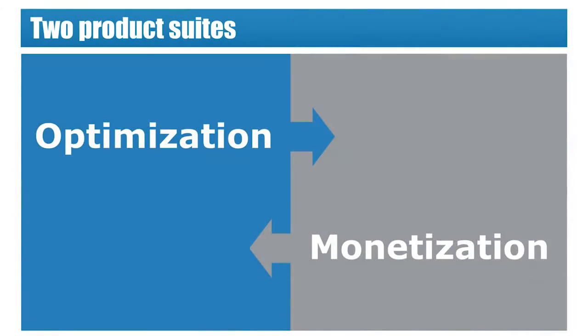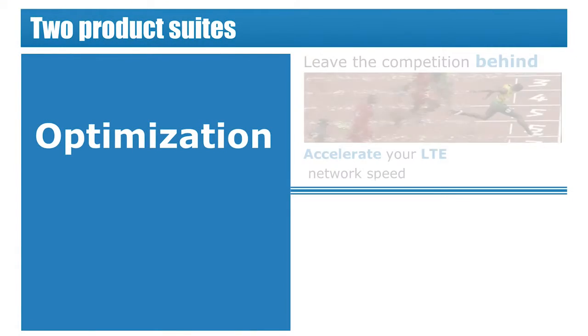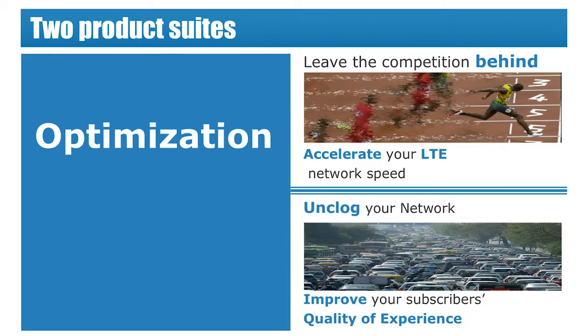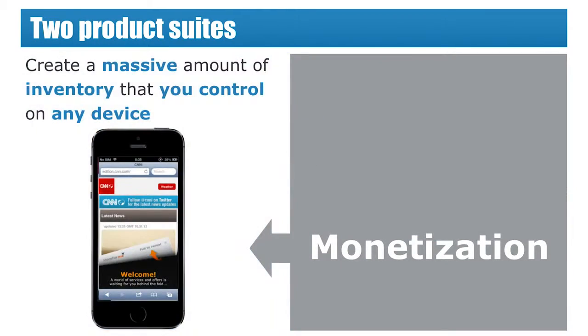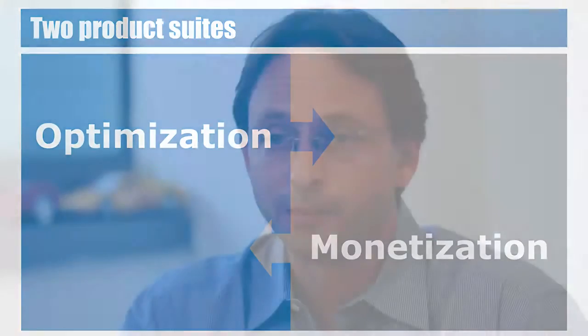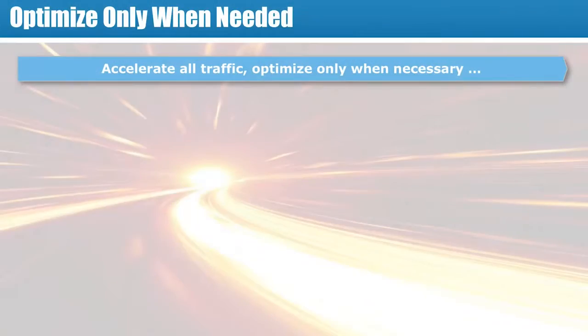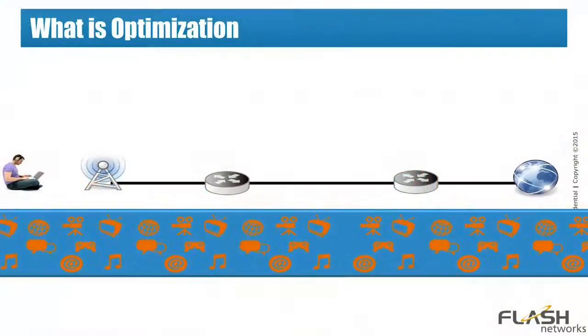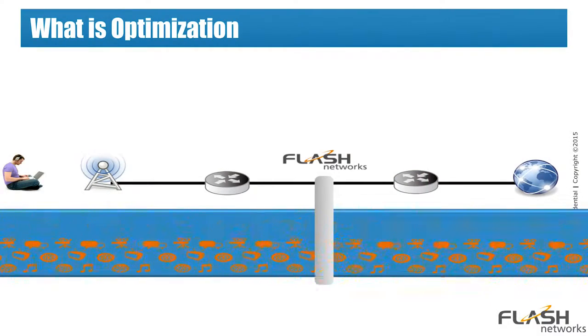Flash Networks is helping operators to both monetize and reduce the cost of their infrastructure and to enable them to be more profitable. Our congestion-based optimization technologies enable the operator to optimize and streamline the data only when needed, in order to best utilize the radio spectrum efficiency.